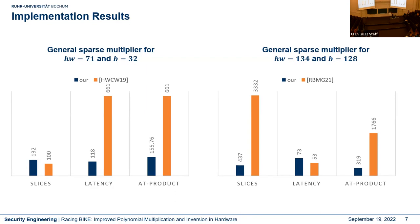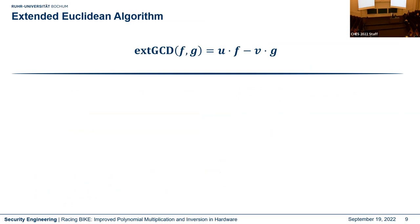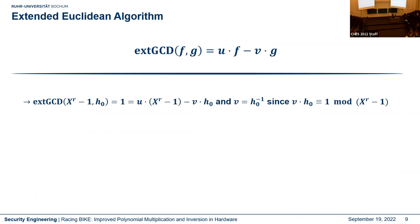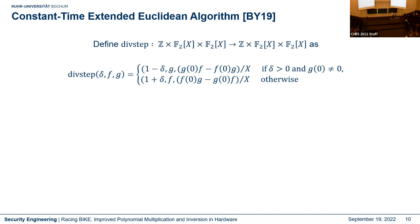This brings me to the second part: optimization of polynomial inversion used in key generation. The first BIKE hardware implementation used inversion based on Fermat's little theorem. We investigated another approach based on the extended Euclidean algorithm. Using the extended GCD, we instantiate it with x^r - 1 and h0. The GCD is always one in BIKE, giving us: 1 = u*(x^r - 1) - v*h0, where v is the inverse of h0.